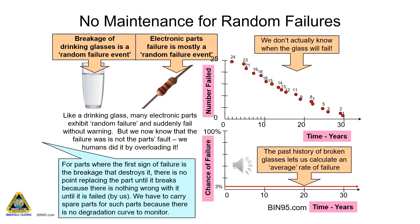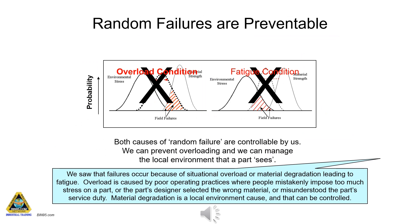In random failure situations there is no certainty when a failure will happen — you can go for years without anything going wrong, or get several failures in close proximity. Random failures are preventable. Both causes of random failure are controllable by us — we can prevent overloading and we can manage the local environment that a part sees. We saw that failures occur because of situational overload or material degradation leading to fatigue.